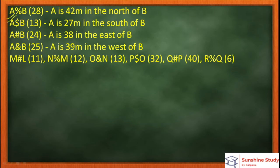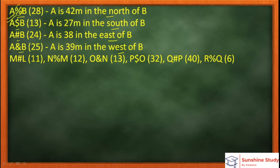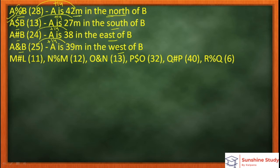Watch this video till the end. The first line says: A percentage B — 28 x 42. The symbol percentage means North, dollar means South, hash means East, and the meaning of the other symbol is West. In brackets, the numbers follow a pattern: 28 to 42 (difference 14), 13 to 27 (difference 14), 24 to 38 (difference 14), and 25 plus 14 equals 39. The code symbols represent directions, and the numbers represent distances.